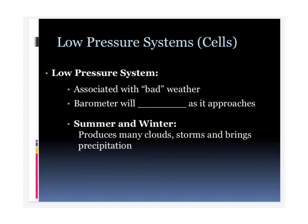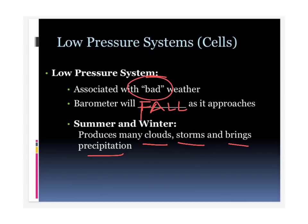A low pressure system or cell is associated with bad weather — clouds, high winds, stormy weather with precipitation, whether that's rain in the summer or snow in the winter. The barometer is going to fall as this low pressure system or cell approaches, because pressure is going down with the low pressure, and the barometer will fall as that pressure cell approaches.